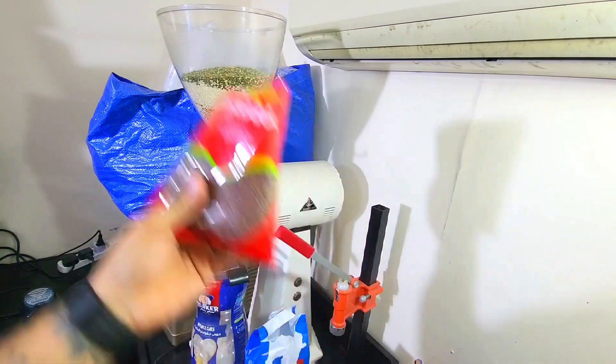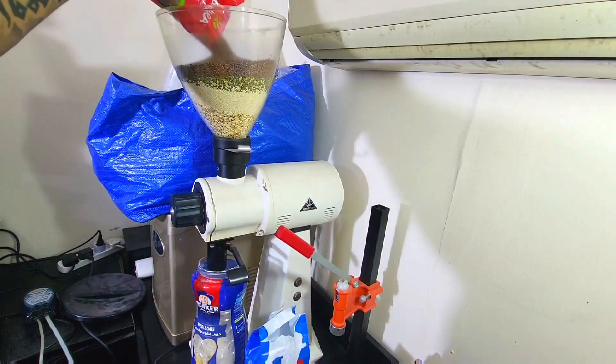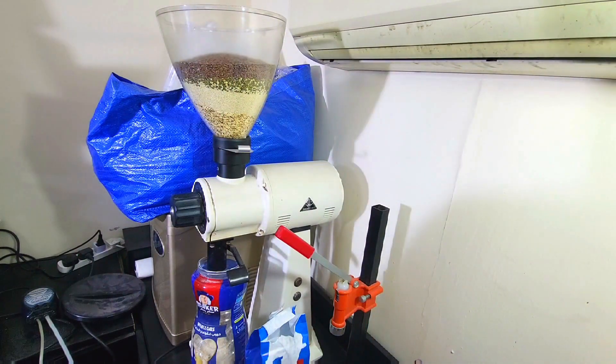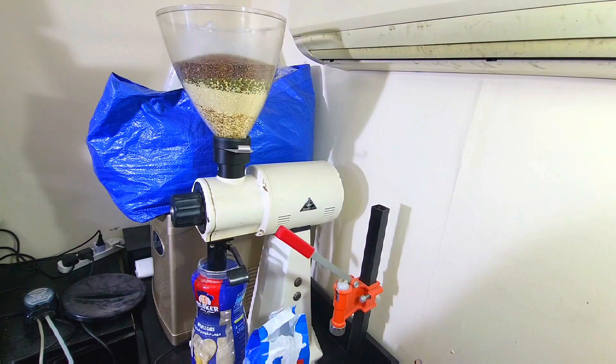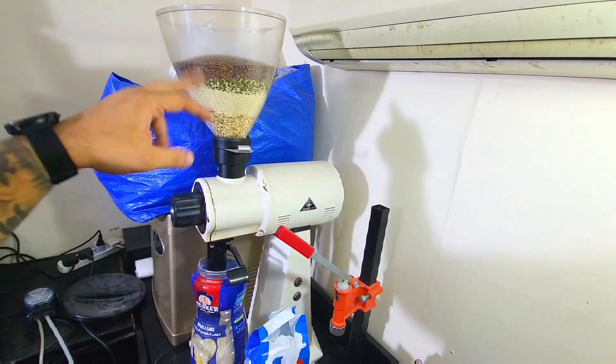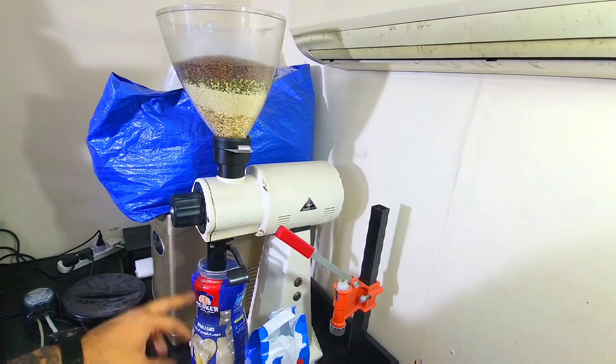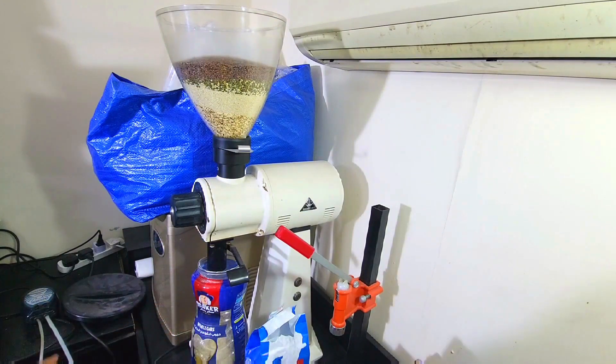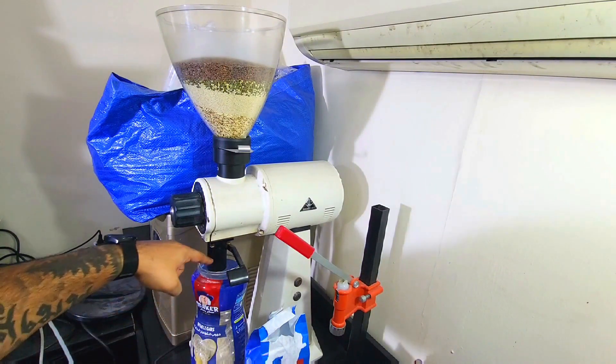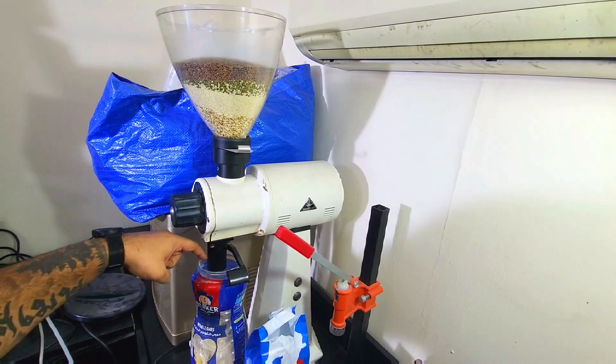This is split black dal or moon dal, one pound. One pound of flax seeds. Obviously this is definitely not big enough to hold everything, so as it fills up I'll just put it into a tray and then fill it up again.